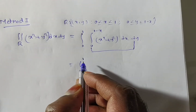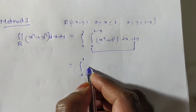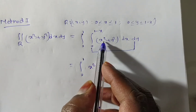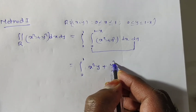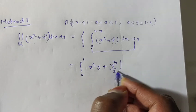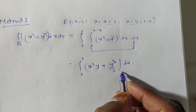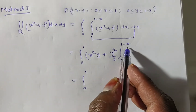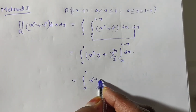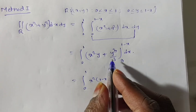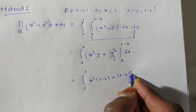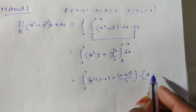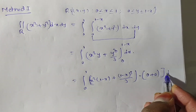Integrating with respect to y: x square times y plus y cube by 3, with limits from 0 to 1 minus x, all times dx. Applying the upper limit minus the lower limit — upper limit is 1 minus x, lower limit is 0.